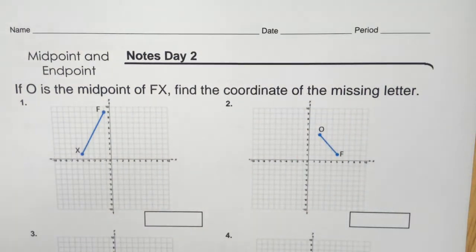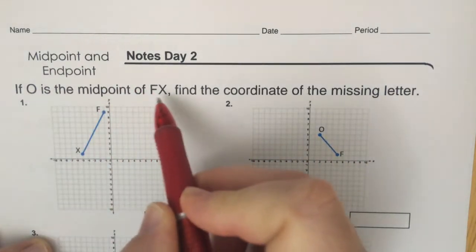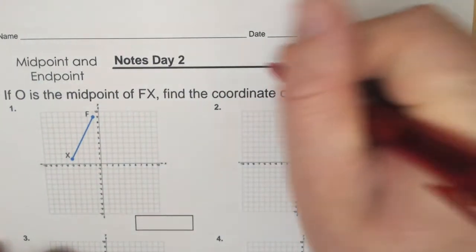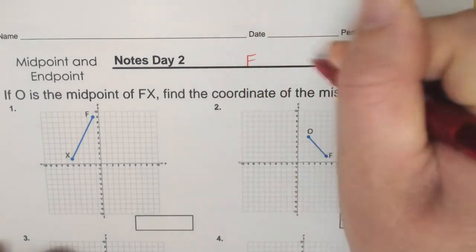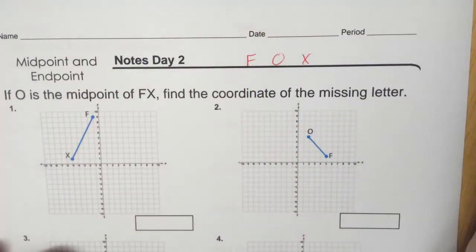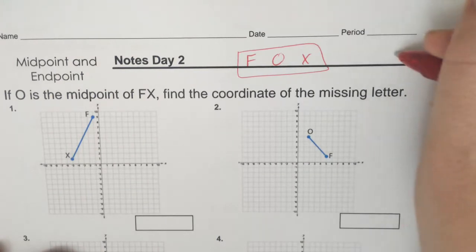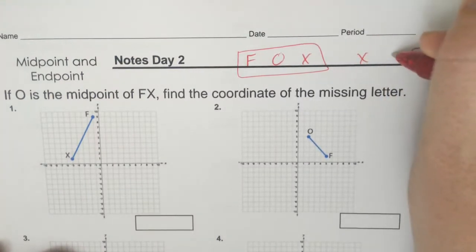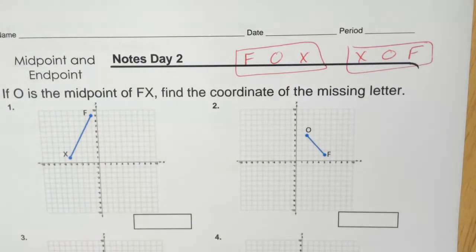It all depends on where the location is. So O is the midpoint of F to X. What this is talking about is that we have F to X and O is in the middle. So it could be this way or it could be the other way — F to X with O in the middle. It could feel backwards.